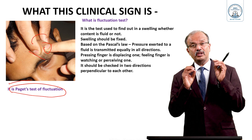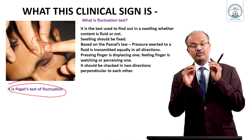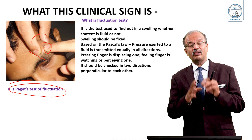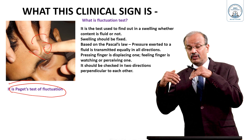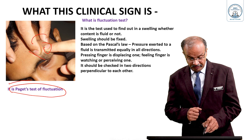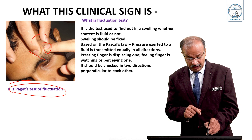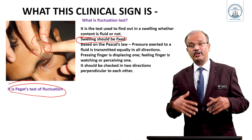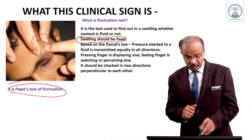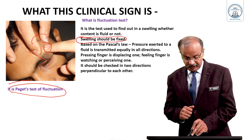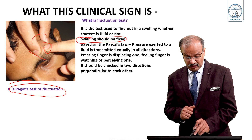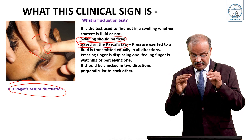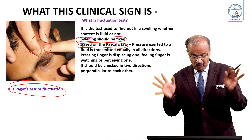Now if the content is fluid, then do a transillumination test. If the test is clear or transilluminating, then the fluid is clear; otherwise the fluid is not clear. Swelling should be fixed — it is very important, it is a prerequisite. If you don't fix the swelling you can't elicit the fluctuation, like in an abdominal mass. This test is based on Pascal's law: pressure exerted on a fluid is transmitted equally in all directions.